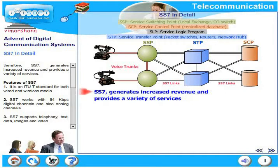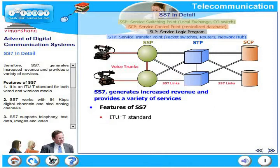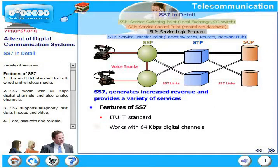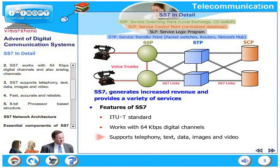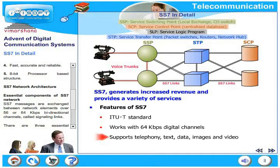Therefore, SS7 generates increased revenue and provides a variety of services. Features of SS7 typically include: it is an ITU-T standard for both wired and wireless media; SS7 works with 64 kilobits digital channels and also analog channels; SS7 supports telephony, text, data, images, and video; it is fast, accurate, reliable, and uses an 8-bit processor-based structure.